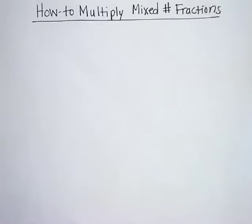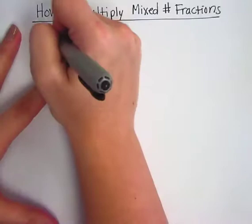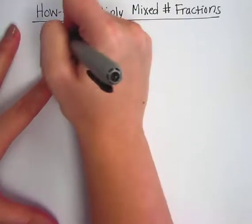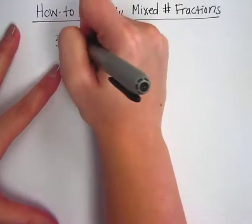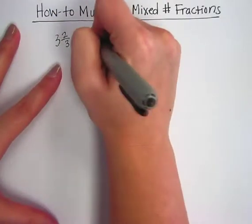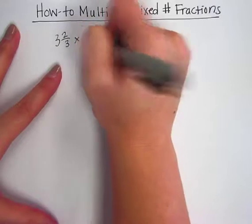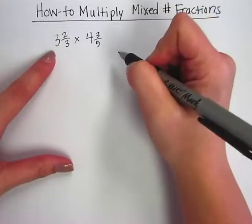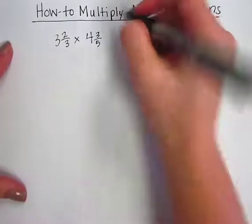Hi, today I'm going to show you how to multiply mixed number fractions. The problem I'm going to show you will be 3 and 2 thirds times 4 and 3 fifths. These are considered mixed number fractions because they have a whole number along with the fraction.